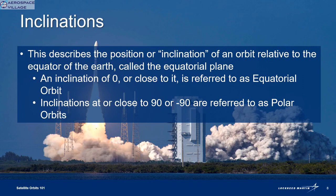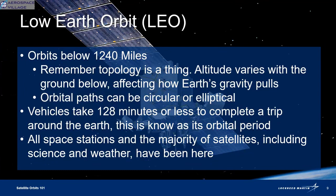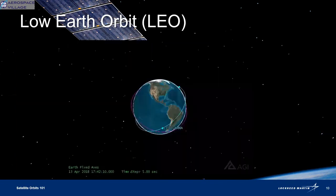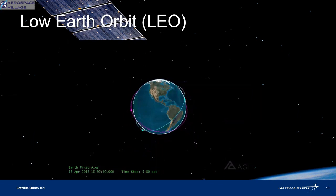Inclinations describe the position of a satellite in relation to the equator of the Earth as though it were an angle. A satellite with an inclination of zero would be right above the equator, and one with an inclination of 90 or negative 90 is over the north or south pole respectively. LEO, or low Earth orbit, is an orbit that happens at 1,240 miles or less above the Earth's surface. It can be circular or elliptical, and a vehicle at this altitude would take 128 minutes or less to make a trip around the Earth. There's a lot in LEO right now, including the International Space Station. Let's take a look at what a LEO orbit would look like using some SDK software visualizations — notice how close those satellites and orbital paths are to the Earth.